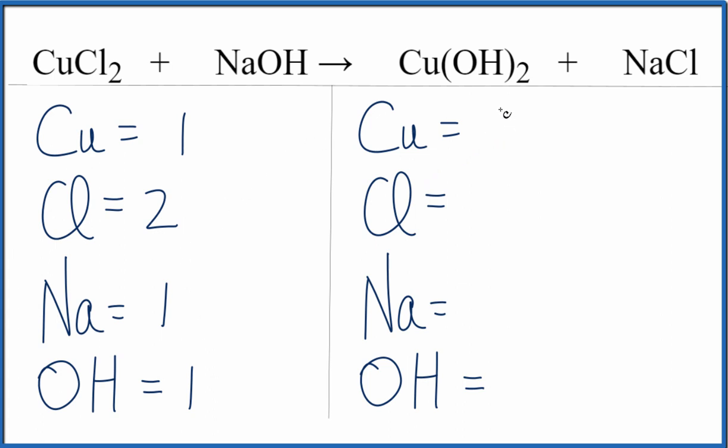So when we come on the product side we have one copper, then we have chlorine, the one, and the sodium, one of those, and then the OH. This two applies to everything, so we have two hydroxide ions, so we'll just put a two here.